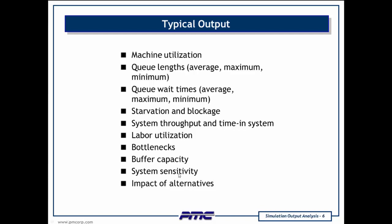System sensitivity is high relative to a system parameter if a small change in that parameter — for example, cycle time of a machine — changes system performance greatly. It is low if small changes in the input produce small changes in the output. In a manufacturing example, system sensitivity would be high for a bottleneck machine; otherwise, it would be low.